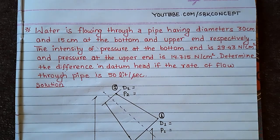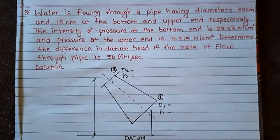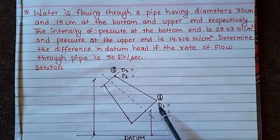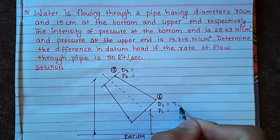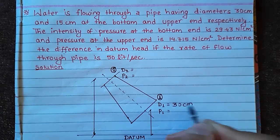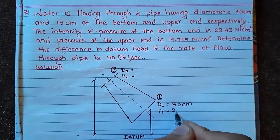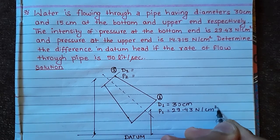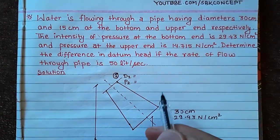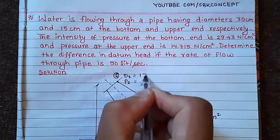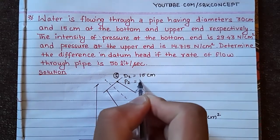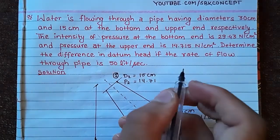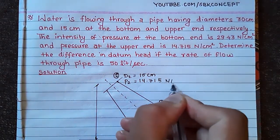Now I am going to show you a figure. This pipe lower bottom diameter is 30 cm. This pressure is 29.43 N/m². This is the diameter of 15 cm. Pressure is 14.715 N/m².